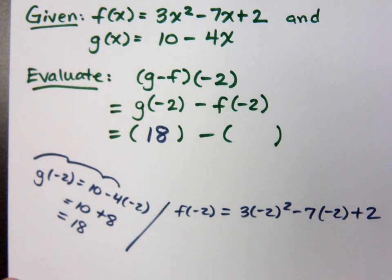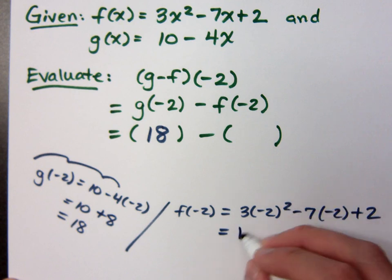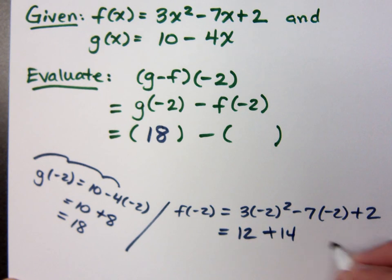You've got to pay attention to your signs. Make sure that you do multiply correctly. What's 3 times negative 2 squared? 12. This gives you 4 times 3 is 12. Negative 7 times negative 2 is? Positive. Positive 14 and then plus 2. And all of that gives you what? It gives you 28.